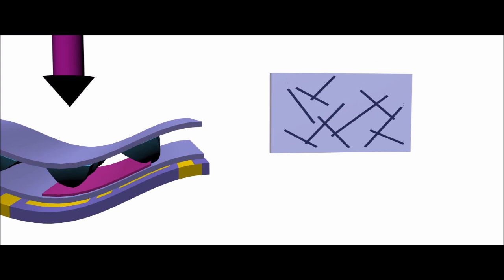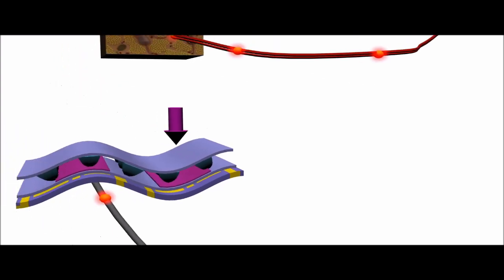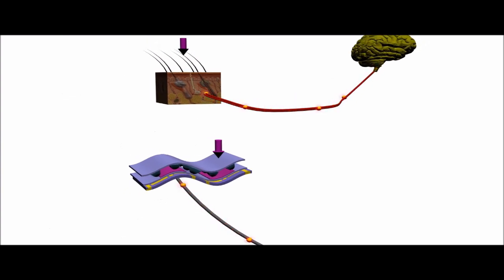As more electricity flows through the sensor, the circuit layer produces electrical pulses more frequently, mimicking the properties of real mechanoreceptors.